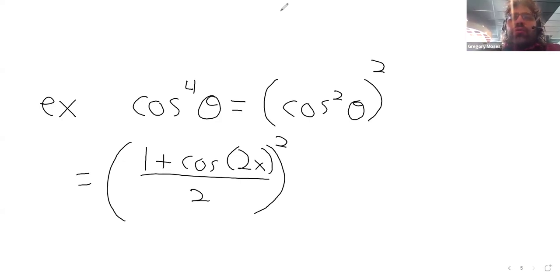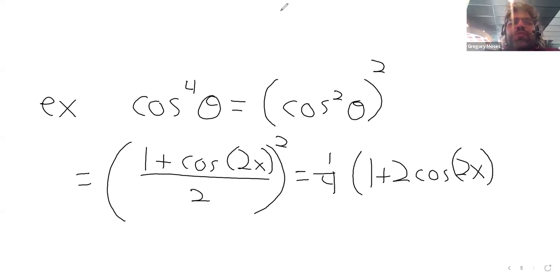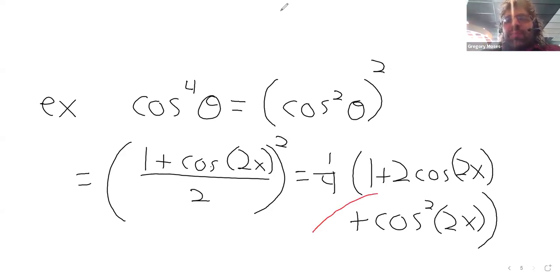And then we can FOIL this out. And get 1 fourth times 1 plus twice the cosine of 2x. And then, sadly, when we FOIL this, we're going to get this cosine times a cosine. We're going to get a cosine squared of 2x. And the reason I use the word sadly here is that when we're using the reduction formula, we're trying to get rid of powers. And we haven't totally gotten rid of the powers. We have this square here.